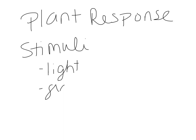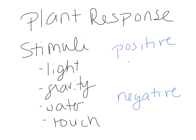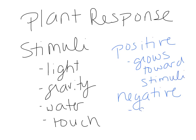Some of the various stimuli that plants can respond to are things like light, gravity, water, and touch. All of those things can cause a change within the plant. When the plant responds to a stimulus, it can be either a positive or a negative response. Positive and negative in this case do not mean good or bad. Positive just means that it grows towards the stimulus — going in the same direction. Negative means it would grow away from the stimulus.